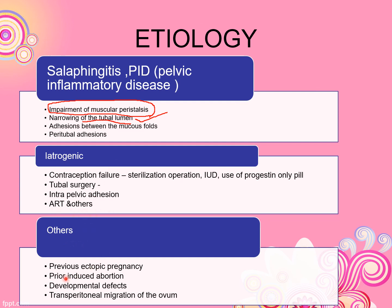Other causes include previous ectopic pregnancy, prior induced abortion, and developmental defects of the tube. Transperitoneal migration of the ovum is another cause — where the fertilized egg crosses the peritoneal cavity and implants at an abnormal site.